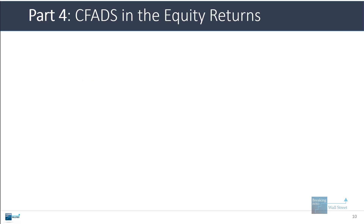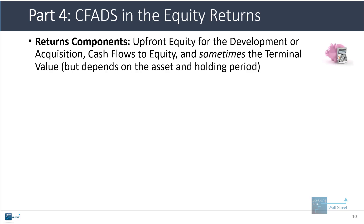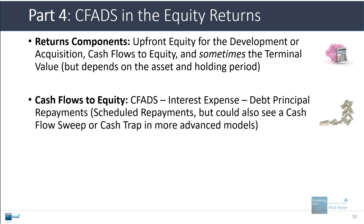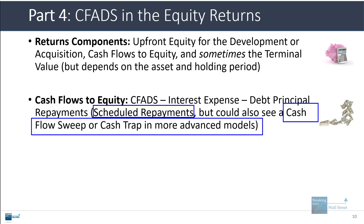The last thing to cover is CFADS in the equity returns calculations. The basic components for equity investors in project finance are the upfront equity used for development or acquisition, the cash flows to equity, and sometimes a terminal value depending on the asset and holding period. Cash flows to equity are based on CFADS minus the interest expense minus the debt principal repayments — normally scheduled repayments based on debt sculpting, but in more advanced models you could see a cash flow sweep, a cash trap, or other items.